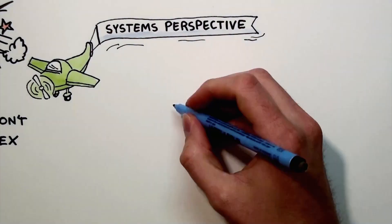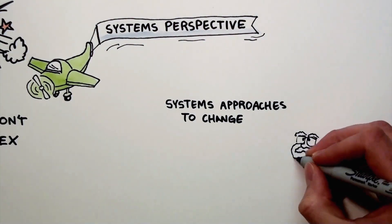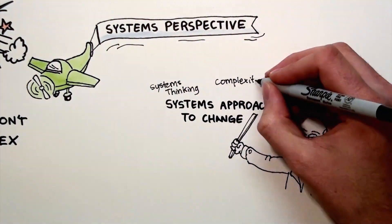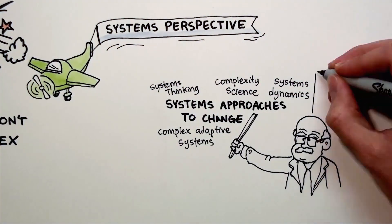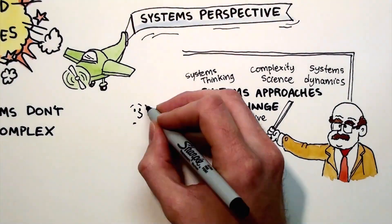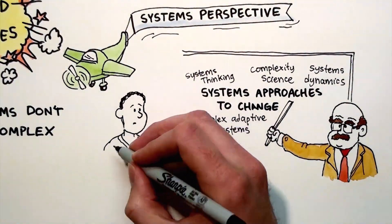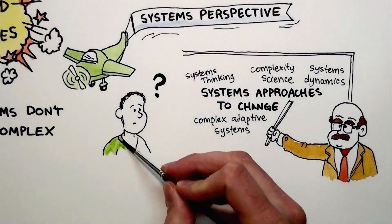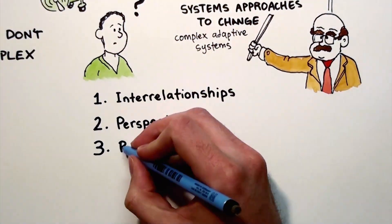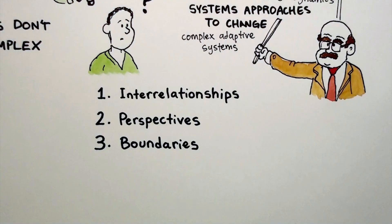Systems approaches to change have emerged from a wide range of disciplines, including systems thinking, complexity science, system dynamics, and complex adaptive systems. Such terms can be daunting to health professionals who are new to these ideas. However, we've found that starting with three fundamental concepts, as suggested by Bob Williams, can be helpful: interrelationships, perspectives, and boundaries.